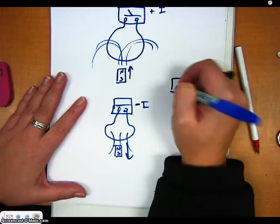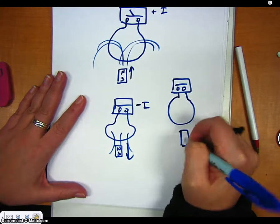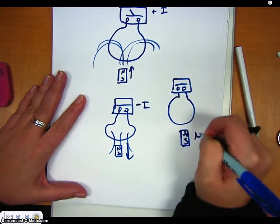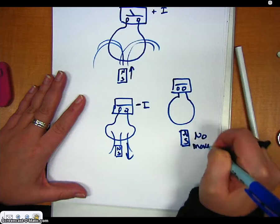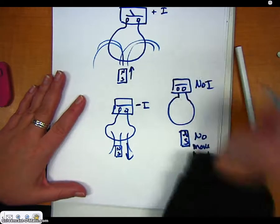And then, when he had the galvanometer and he just held the magnet in a fixed position, so no movement, gave him no current.